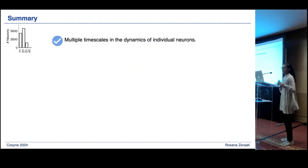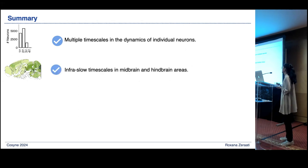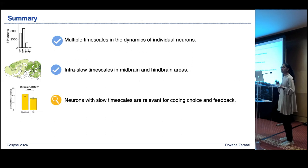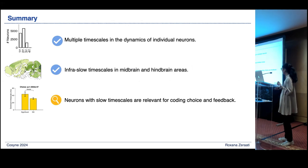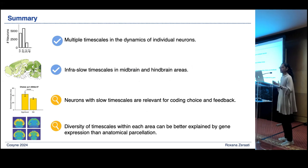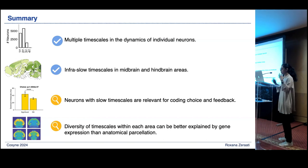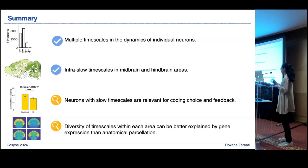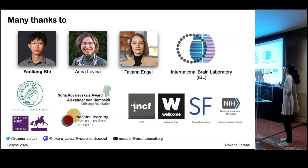To summarize: we showed that individual neurons have multiple timescales in their dynamics; there are surprisingly slow timescales in midbrain and hindbrain areas, which is unexpected given hierarchical organization; neurons with slow timescales may be relevant for coding choice and feedback; and the spatial organization of timescales can be partly explained by gene expression, performing better than anatomical parcellation. We are now looking further into individual brain areas and individual genes. Thank you all for your attention.